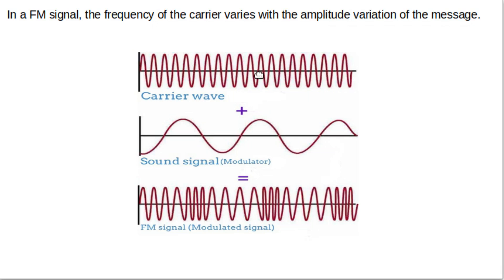The carrier has an original frequency, and its frequency increases from that value when the message amplitude increases. Similarly, when the amplitude of the message decreases, the frequency of the carrier decreases. The frequency varies continuously with the message amplitude — the FM signal carries message information in the form of frequency variation. Importantly, the amplitude of the FM signal remains constant regardless of message amplitude variation; all variation in FM is in its frequency.